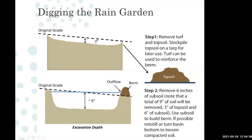When digging the actual garden, once you get the shape roughed out with garden hoses, marking paint, or flags, you start installation. The dotted line represents the original grade. First, remove the top three inches of topsoil and set it aside — that's your best soil and you don't want to lose it. Then dig down into the next six inches, which is typically your subsoil — heavier and harder clay.